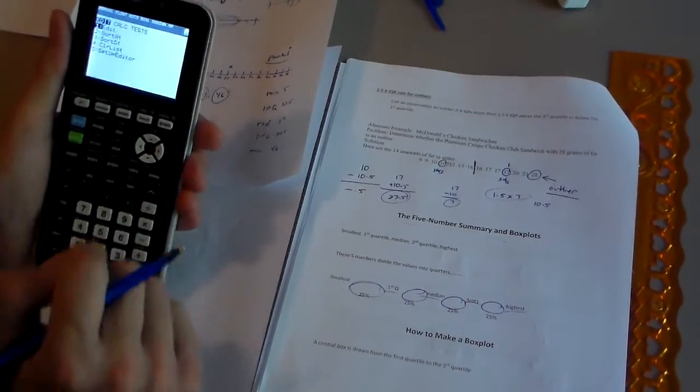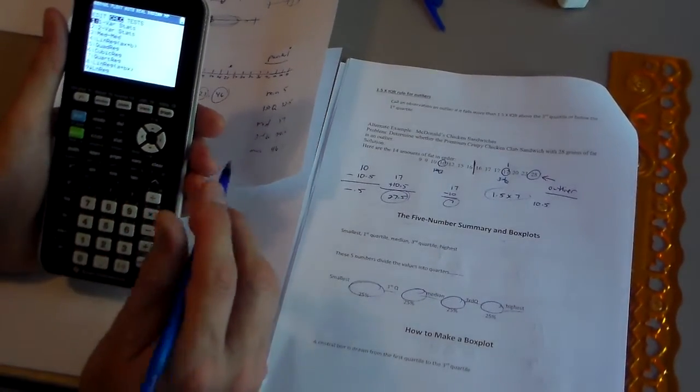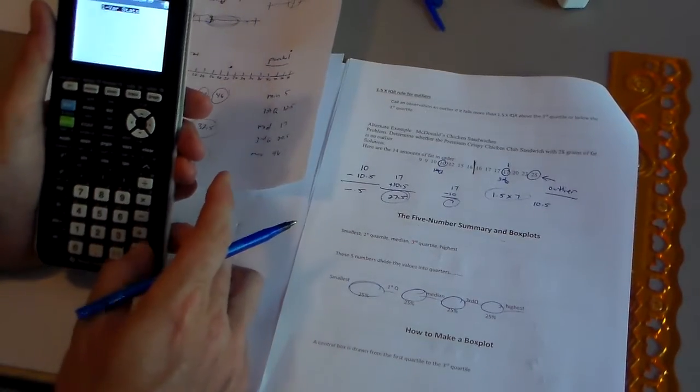So we hit stat, and we go to calc, and you arrow to calc. You'll have this in the video, so you can always check it. See how it says one variable statistics? I'm going to hit enter.